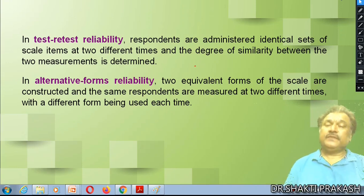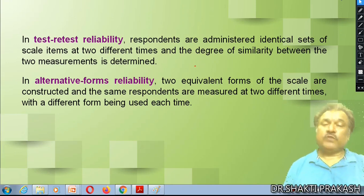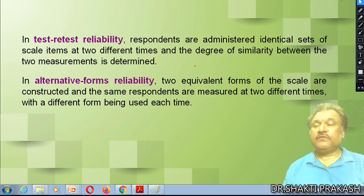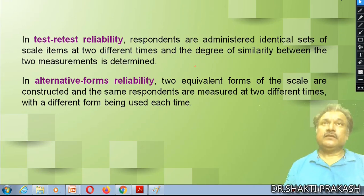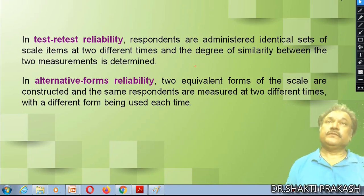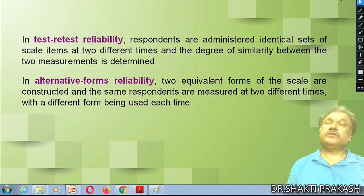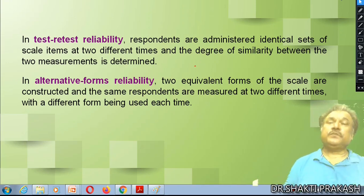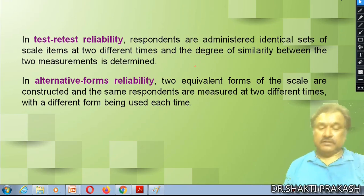Alternative forms of reliability: two different forms of the scales are constructed, and the same respondents are measured at two different times, with a different form being used each time. Suppose you are using one Likert scale, and then again using a second type like a semantic differential scale or staple scale. Then the results of these types of scales should be consistent when you are going to check reliability.